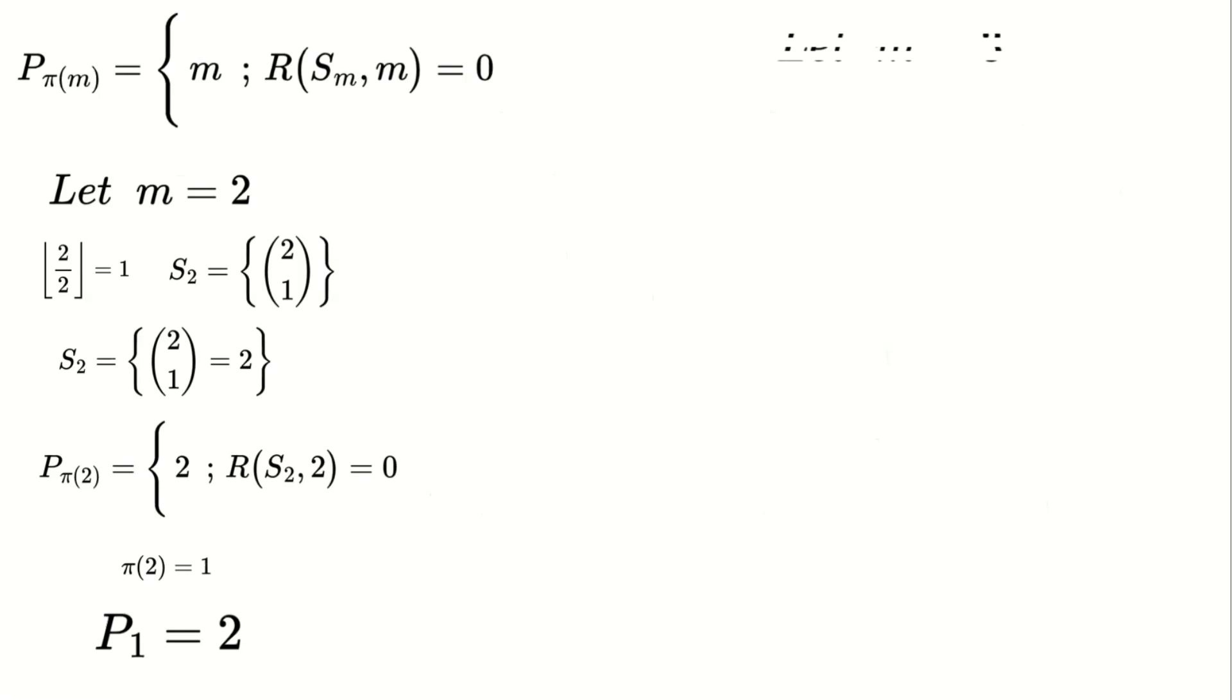Let's try another example, m equals three. The floor of three over two equals one. So S_3 will have one element, three choose one, which equals three. Using the formula, we find that P_π(3) equals three, as R(S_3, 3) equals zero. Therefore, three is the second prime number.